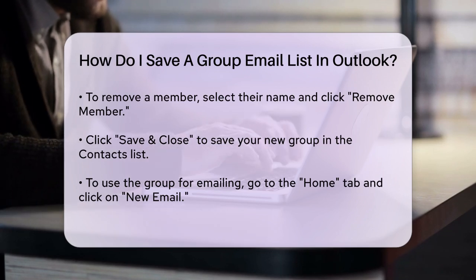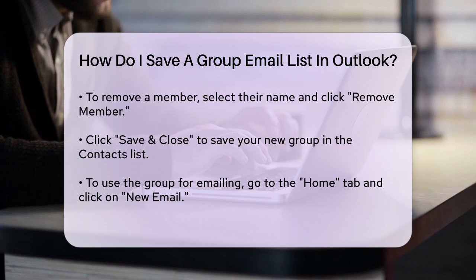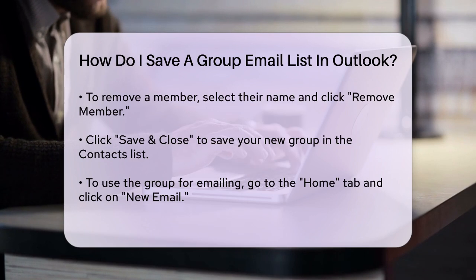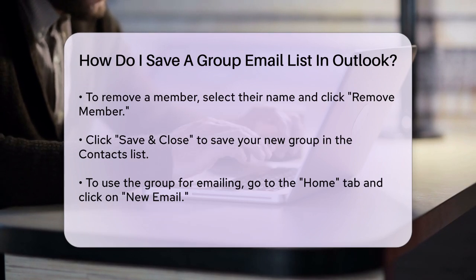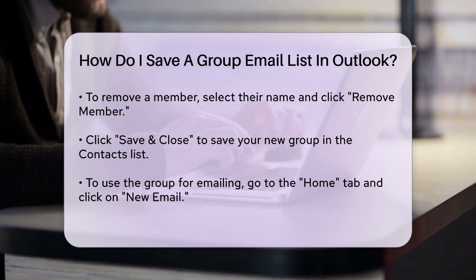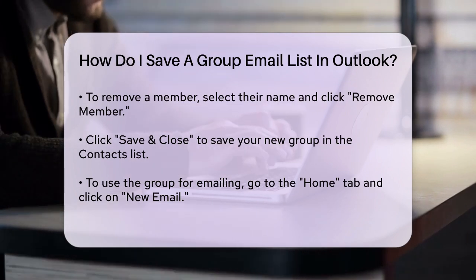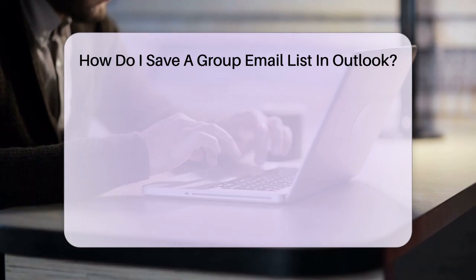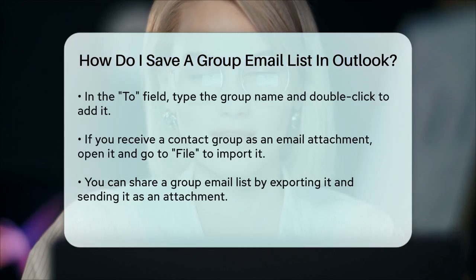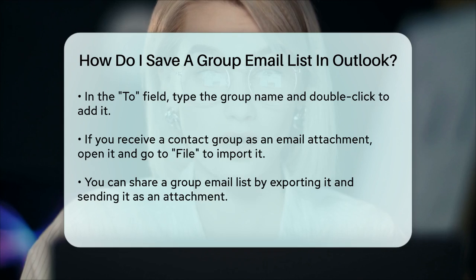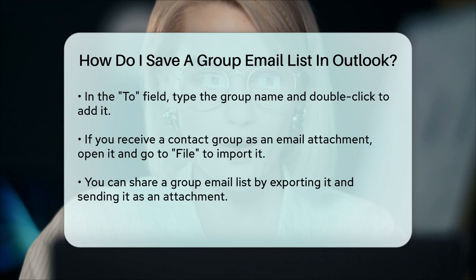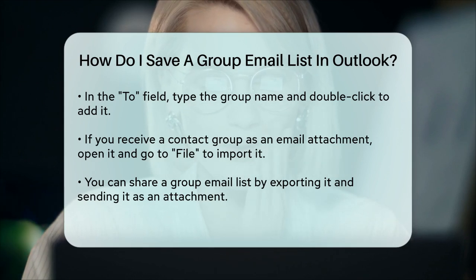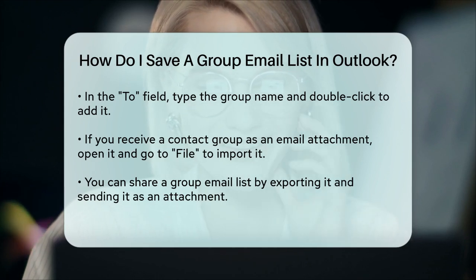If you receive a contact group as an email attachment, you can also import it into your Outlook contacts. To do this, open the attachment, go to File, select Move to Folder, and choose your contacts list. This way, you can easily save and use the contact group.